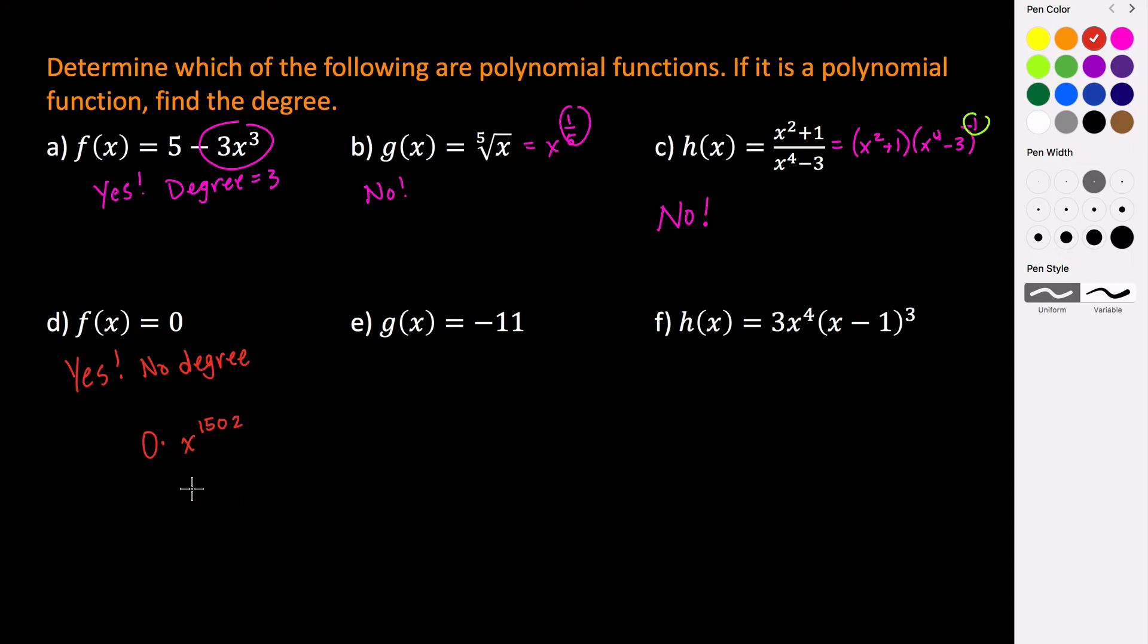All of these, no matter what our value of x is, would yield zero. So this function, which is called the zero function, is not assigned a degree, because we don't know what zero is multiplying. We don't know what power of x this zero is multiplying. So it is a polynomial function, but it does not have a degree.